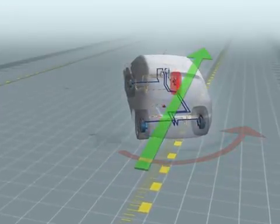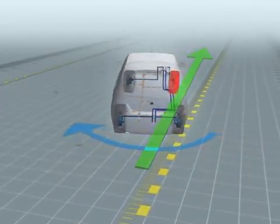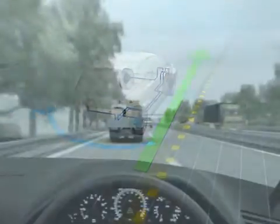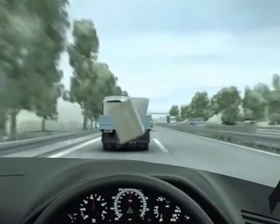In this case, ESP brakes the right front wheel. The torque is reduced. Instead of going into a skid, the car stays on course. Thanks to ESP.